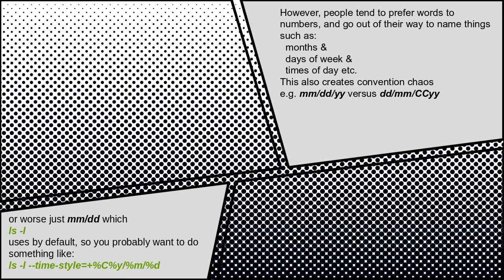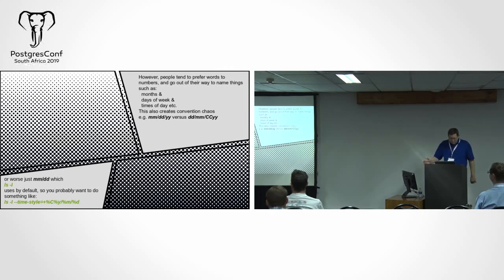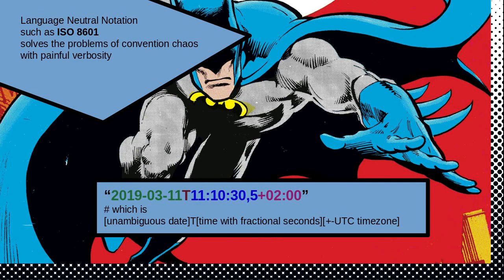We tend to prefer words to numbers — it's easier to have concepts in words rather than numbers — so we translate all of this into months, days of the week, times of day, etc. That creates its own chaos, like how in 2018 systems still don't know to use day-month instead of month-day. On Linux you can set the time style. We end up with the language-neutral notation ISO 8601, which solves the problem with verbosity: you get an unambiguous date, a 'T' to indicate time follows, seconds with fractions, and the UTC time zone.